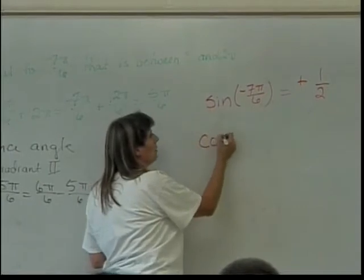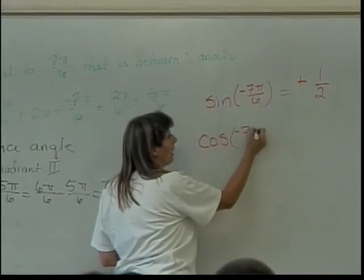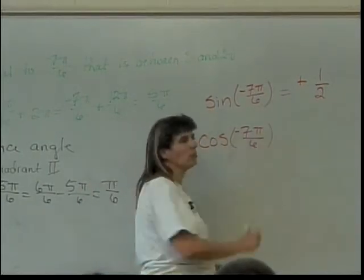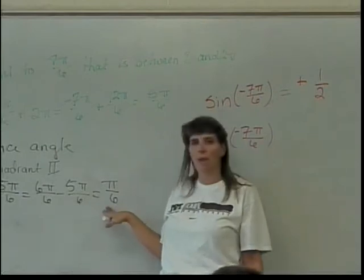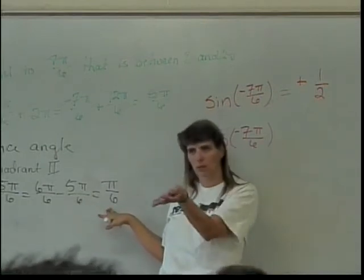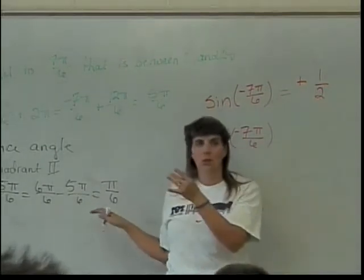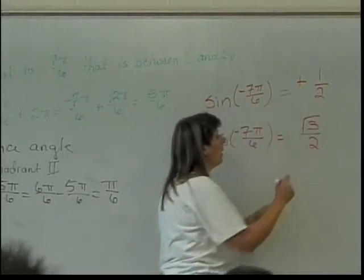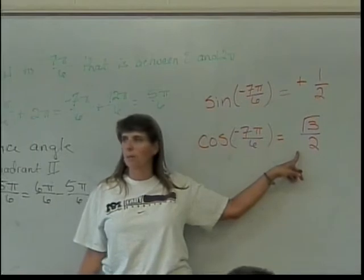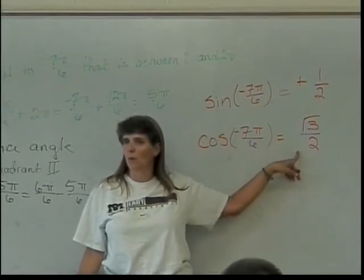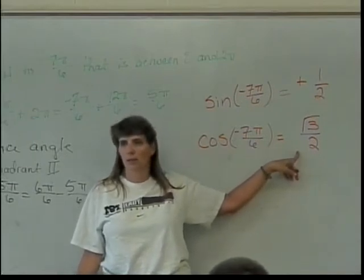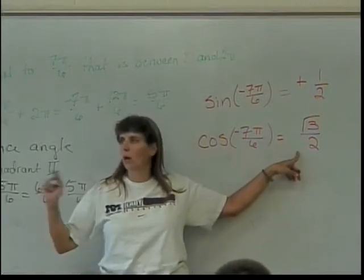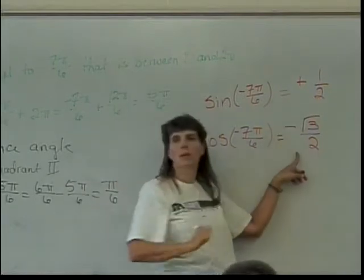And what's the cosine, then, of negative 7 pi over 6? Well, it's going to start out as the cosine of pi over 6, which I know to be square root of 3 over 2. And now the only thing I have to determine is, is it positive or negative? Because it's the X coordinate, and in quadrant 2, the X coordinate is negative.